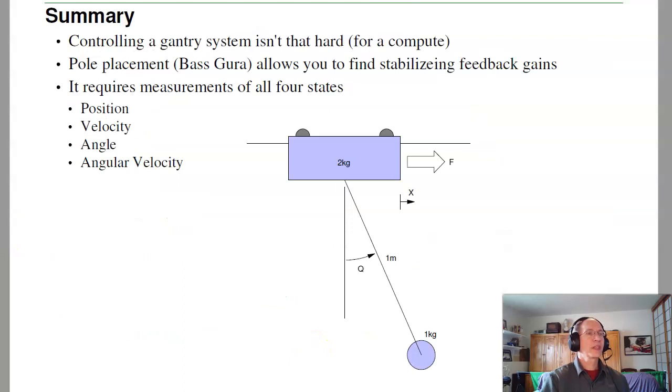So in summary, controlling a gantry system also isn't that hard, at least for a computer. Pole placement, or Boscora, allows you to find stabilizing feedback gains. It requires measurements of all four states. Position, velocity, angle, angular velocity. But if you do have those measurements, then I can put the poles anywhere I want. So that's lecture number 15 for ECE 463, Modern Control. Pole placement applied to a cart and a gantry system.